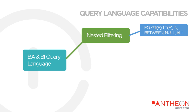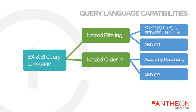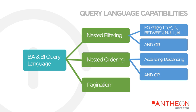Multiple operators like equal, greater than, less than, greater than or equal, less than or equal, in, between, not, and all are supported. Also, multiple expressions can be combined with AND and OR operators. Moreover, the API supports ascending and descending ordering based on one or multiple attributes. Another query language feature is pagination: users can limit and offset the result dataset.